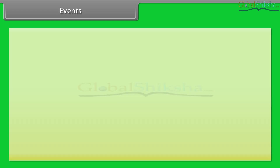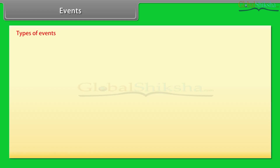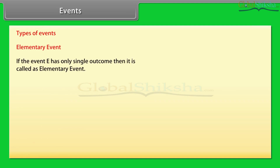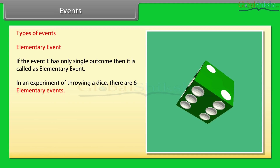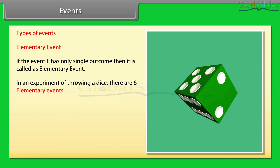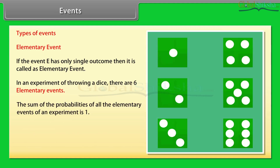Types of events. Elementary event: if the event E has only a single outcome, then it is called an elementary event. In an experiment of throwing a dice, there are six elementary events. The sum of the probabilities of all the elementary events of an experiment is one.